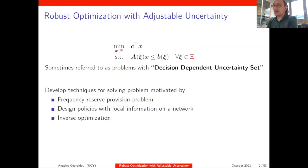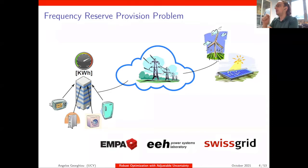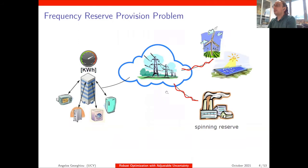Let me start with frequency reserve provision. In an energy system, we have generators — conventional or renewable — and on the other hand we have consumers who use electricity for everyday chores. In the middle sits the system operator that tries to manage the whole system. If demand is high, it calls the generator and asks it to increase its power output. That's how we achieve energy balance in the system.